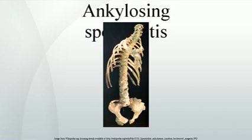Signs and symptoms appear gradually, usually around 23 years of age. Initial symptoms are typically chronic pain and stiffness in the middle part of the spine or the entire spine, often with pain referred to one or the other buttock or the back of the thigh from the sacroiliac joint. Since the initial signs and symptoms are not specific for ankylosing spondylitis, there is a lag time between onset of disease and diagnosis, which averages between 8.5 years and 11.4 years.